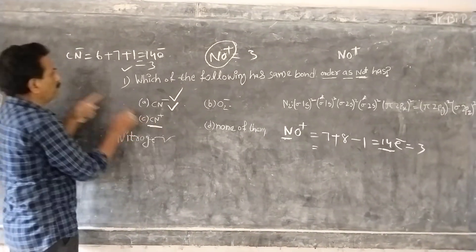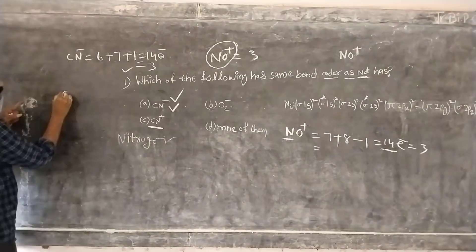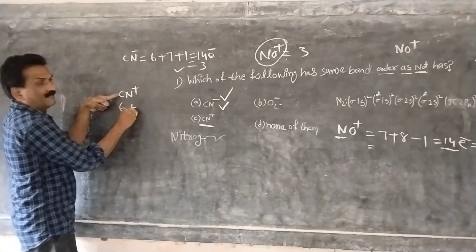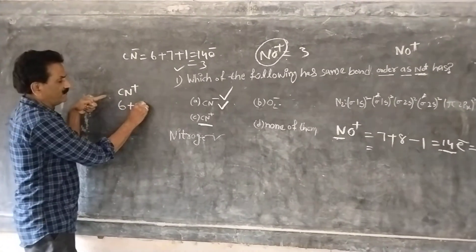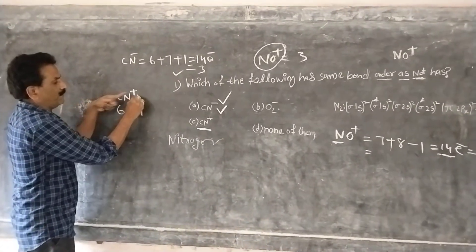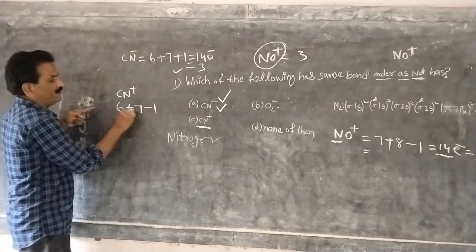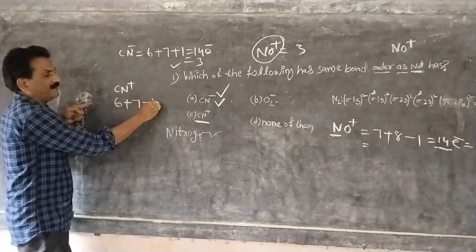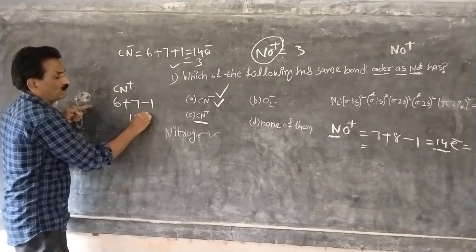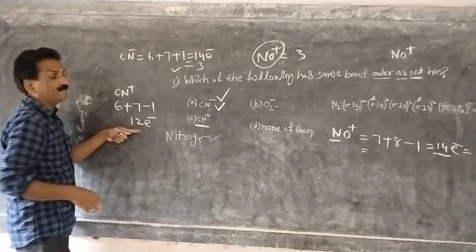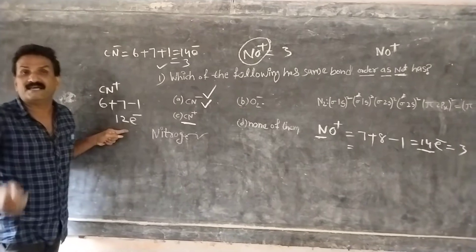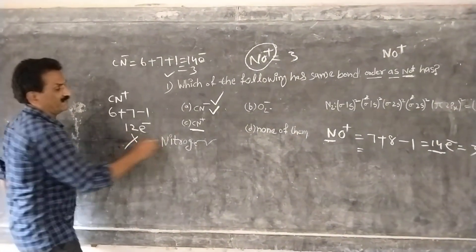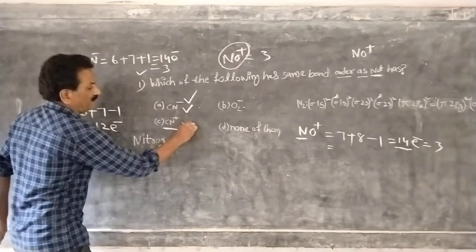Now let us check CN⁺. Carbon has atomic number 6, nitrogen is 7. Plus means remove 1 electron. So 6 plus 7 equals 13, minus 1 equals 12 electrons. 12 electrons means bond order is 2. Wrong answer.